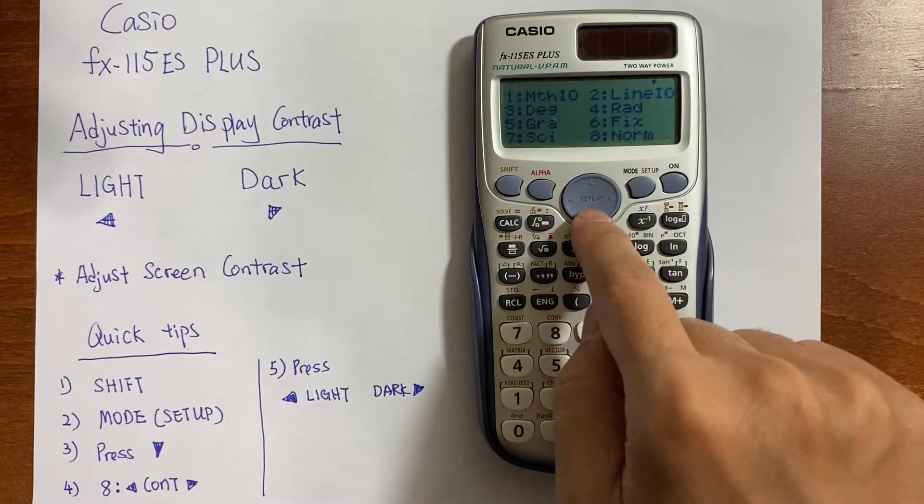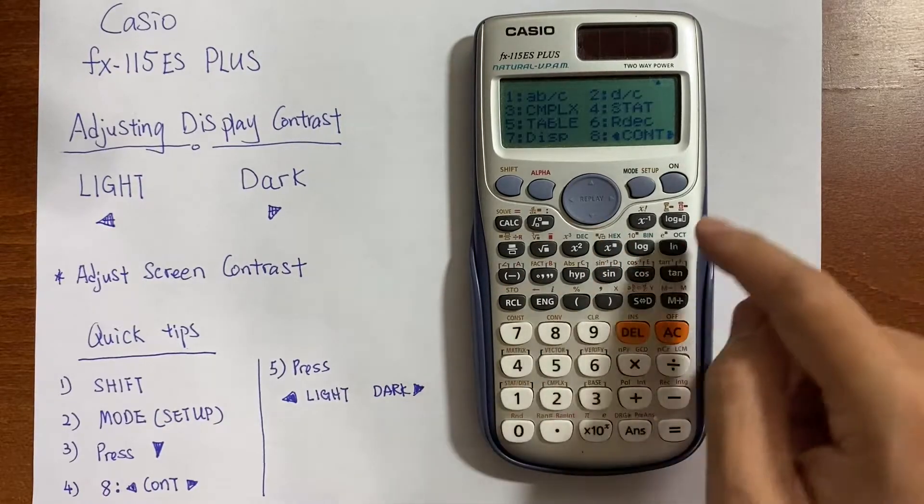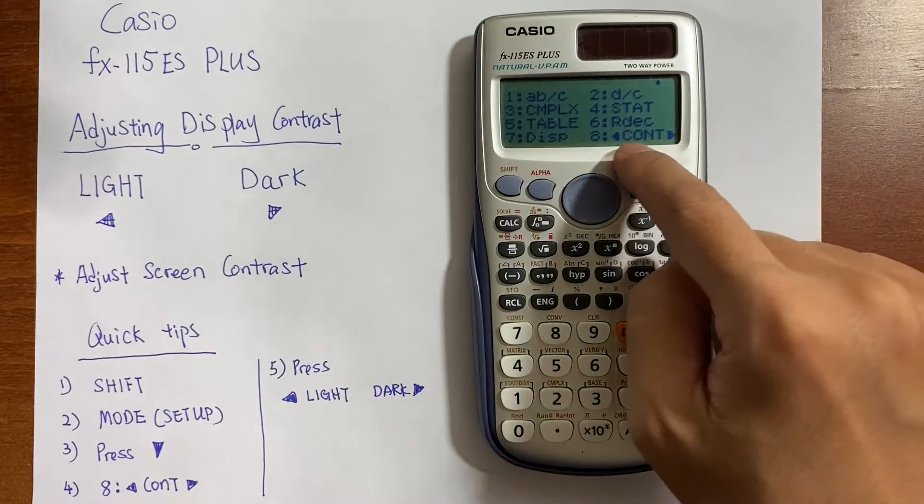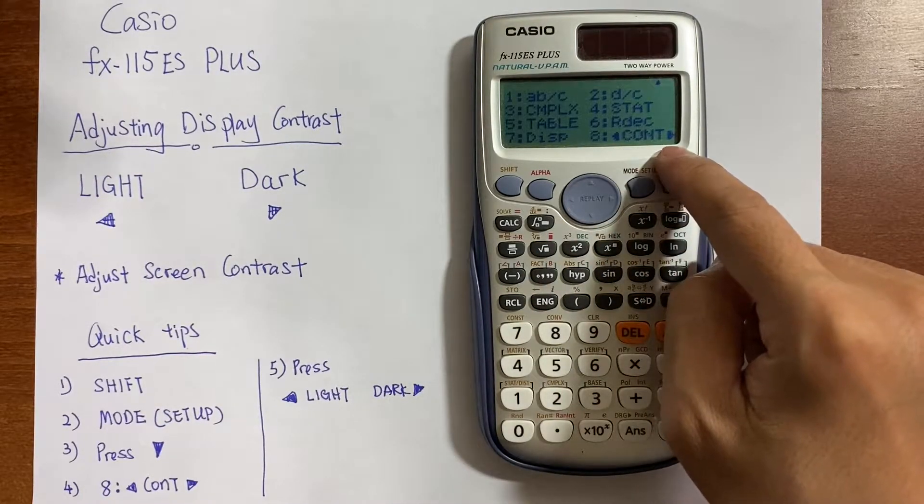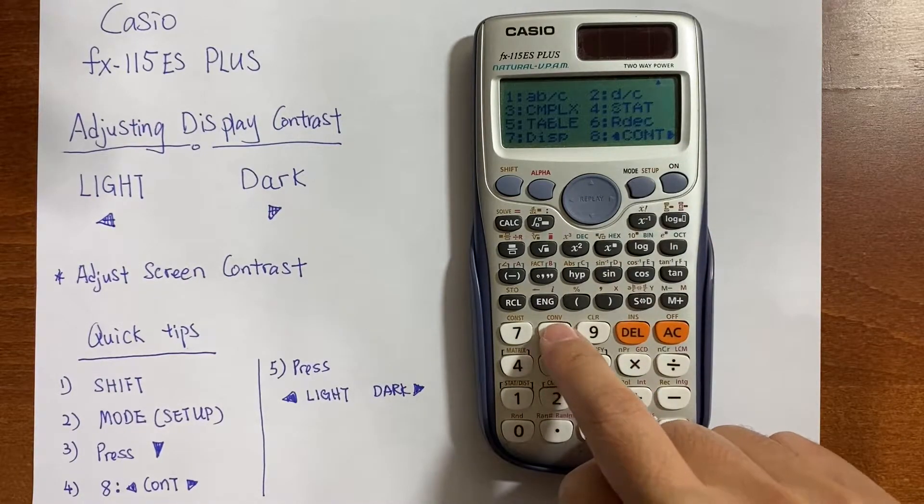Here you have to press the down key on this button. And you'll see number 8 which shows CONT, that's a reference to contrast, left or right. So select number 8.